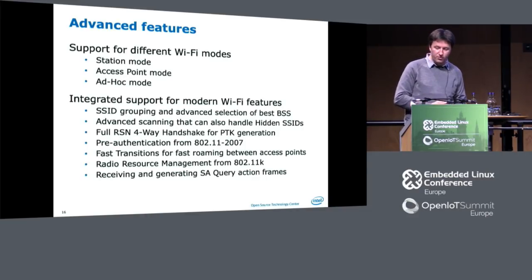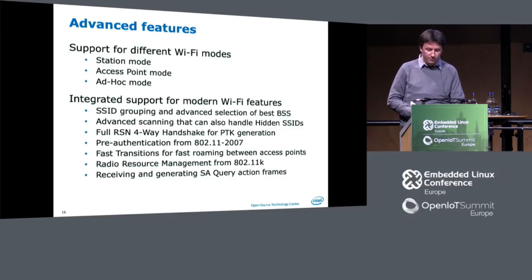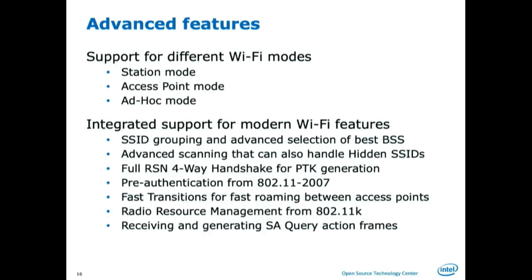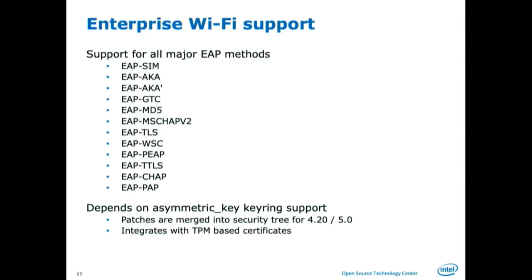What we have right now is station mode, access point mode, and ad hoc mode. We put all the SSID grouping one level down so network managers don't have to do it anymore — we handle hidden SSIDs, the full four-way handshake properly, pre-authentication if available, and fast transitioning. We ask the access point if it has a neighbor and just switch to it — it's unbelievably fast. We manage radio resources properly and authenticate with access points so you can't have anything sneaking in and trying to forcefully disconnect you. The enterprise support is growing — we have most EAP methods done; pretty much everybody uses EAP-TLS or EAP-PEAP and all of that is done, tested, with end-to-end tests and unit tests.